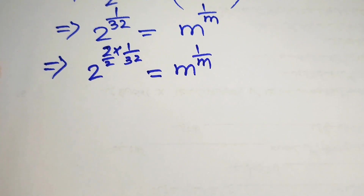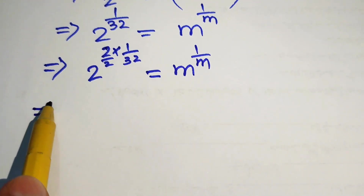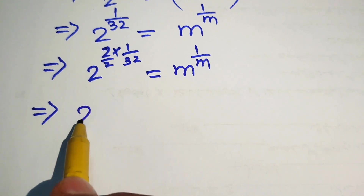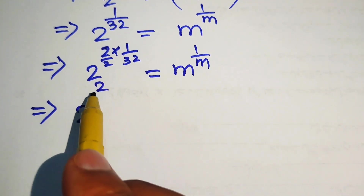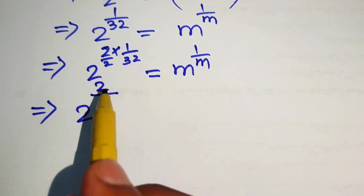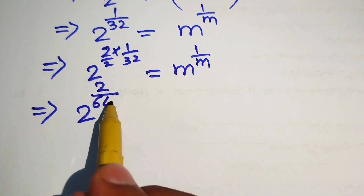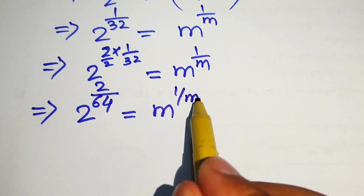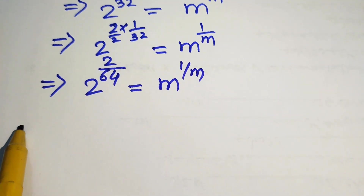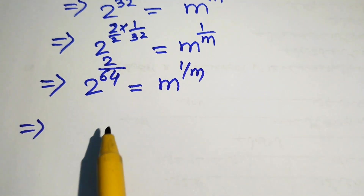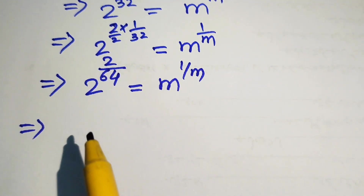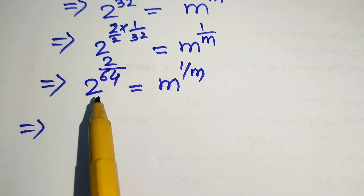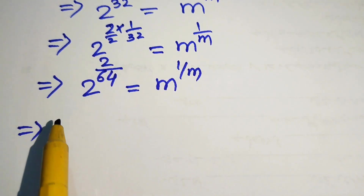After simplification, we have 2 to the power of 2 over 64 equals m to the power of 1 over m. We then repeat this process until we get the base whose exponent is the reciprocal of the base.